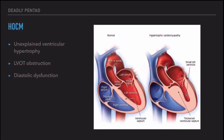Coming to the last ECG — but it is the most important one, and we should not miss these findings in patients with syncope. It is Hypertrophic Obstructive Cardiomyopathy, HOCM, the most common cause of sudden death in young individuals. It is unexplained ventricular hypertrophy leading to left ventricular outflow tract obstruction and diastolic dysfunction due to the large mass of the left ventricle. In this picture we can see the hypertrophy is mostly in the interventricular septum, which can compromise LV outflow.